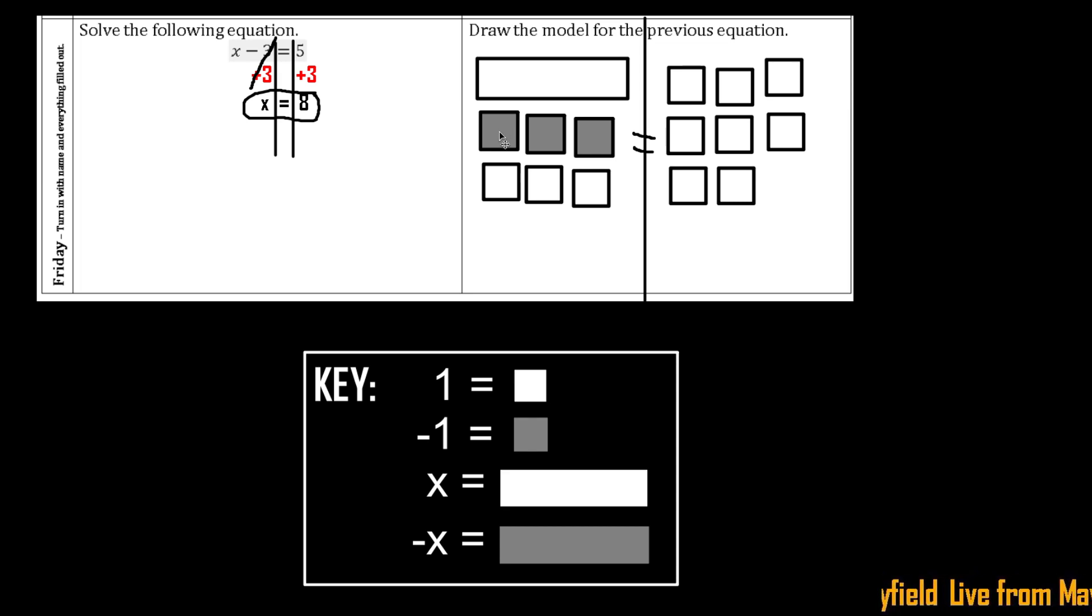For each negative 1 and each positive 1, again those cancel out. So I'm going to take these two.